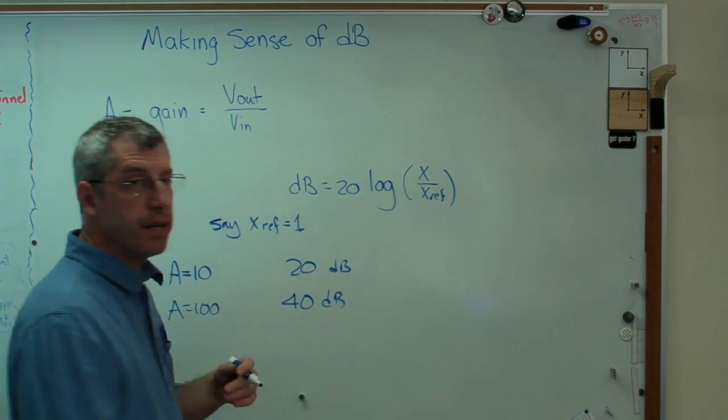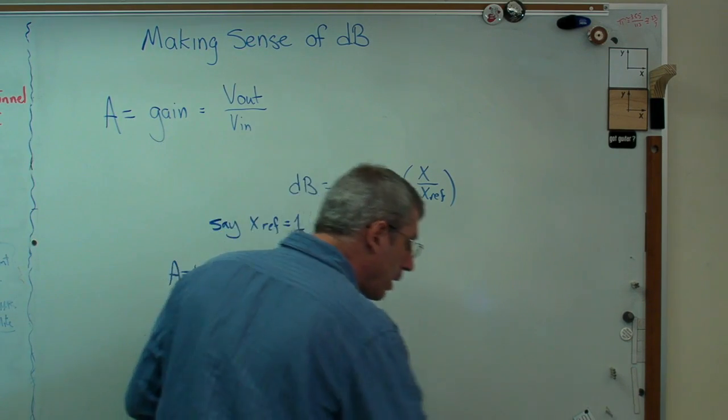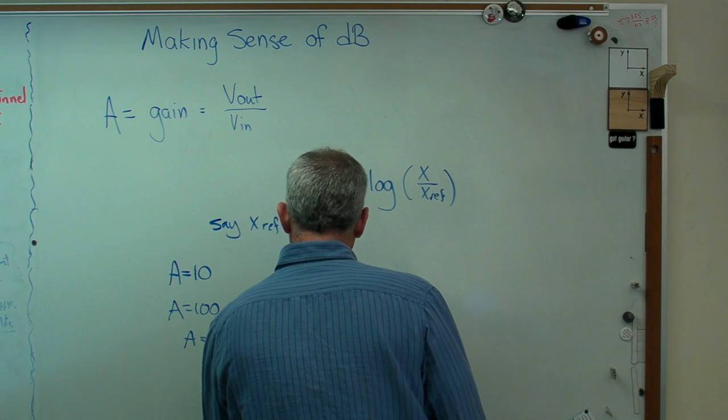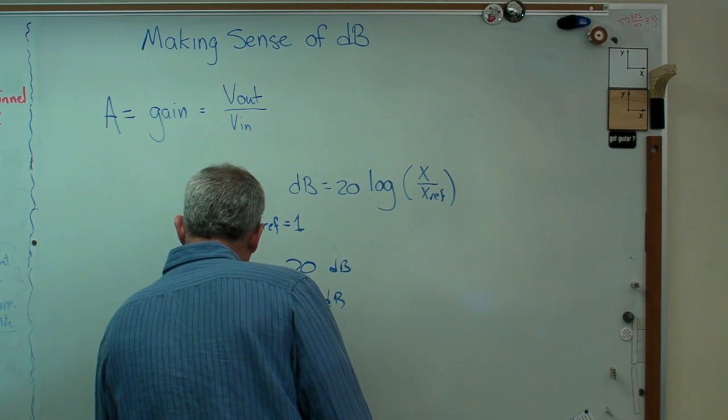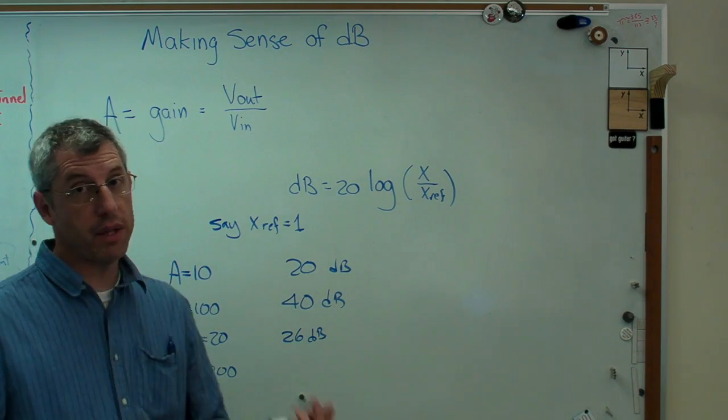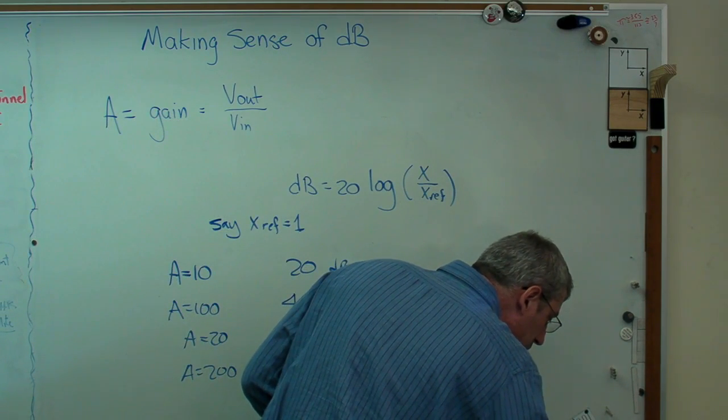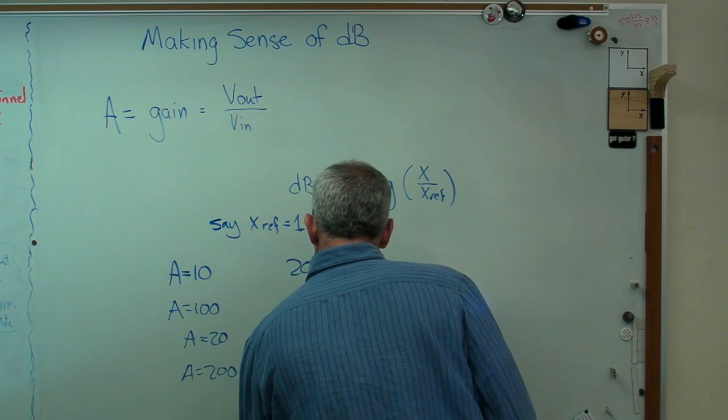Well, if A is 20, I'm going to get 26 dB. Well, if I change the gain to 200, what do I get? I'm going to multiply by 10. That means adding 20 decibels, I should get 46 dB, and I calculated 46.021.